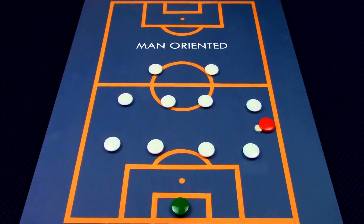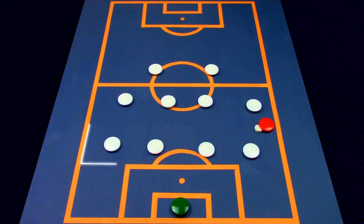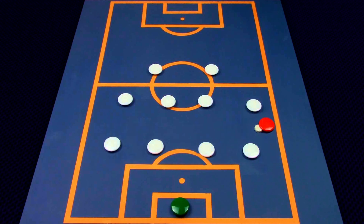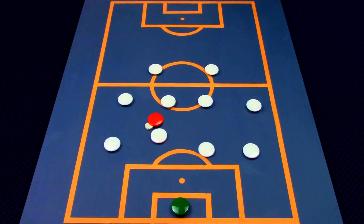Man-oriented zonal marking could be considered the middle ground between man marking and zonal. In this system you play with a basic formation where the reference point is the opponent. From their respective starting position, the defending players orient themselves flexibly in the space they cover in order to maintain a certain distance to the opponent closest to them. In zonal marking, a player must cover the space around their position, loosely moving to any nearby opponent and staying close to them.